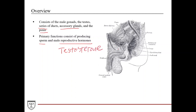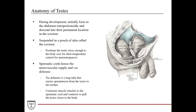Testosterone mediates male reproductive health and development of male features during both embryonic development and puberty. In the male reproductive organs, they sit in the pelvis. For example, here's the prostate, which sits just below the bladder. In the scrotum you have the testes, and then you have the penis with the male urethra traveling through it.